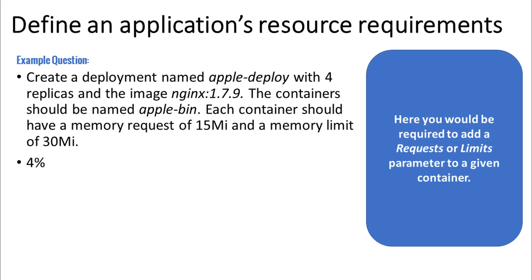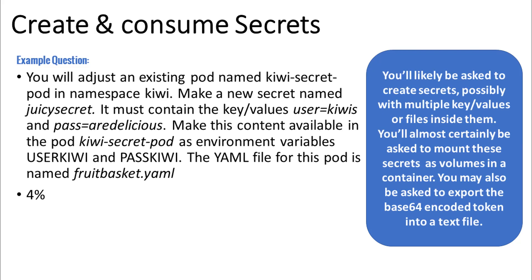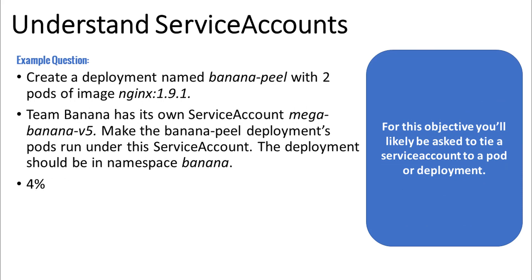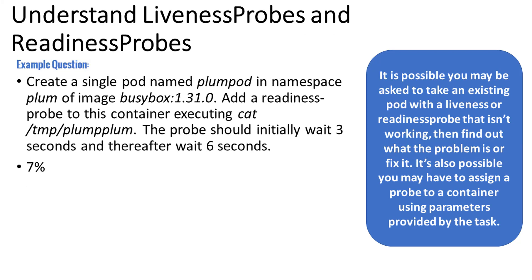Define an application's resource requirements — here you would be required to add a requests or a limits parameter to a given container in a pod. Create and consume secrets: you'll likely be asked to create secrets, possibly with multiple key values or files inside of them. You'll almost certainly be asked to mount these secrets as volumes in a container. You may also be asked to export the Base64 encoded token inside of your secret into an existing text file. Understand service accounts — an example of what you might be asked to do is tie a service account to a pod or deployment. Understand liveness probes and readiness probes: you might be asked to take an existing pod with a liveness or readiness probe that isn't working and find out what the problem is and fix it. It's also possible that you may have to assign a probe to a container using parameters provided by the task.